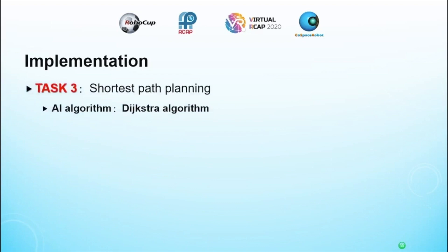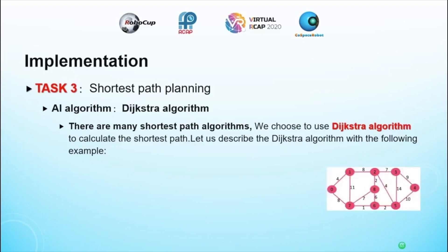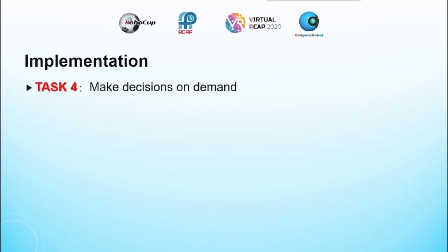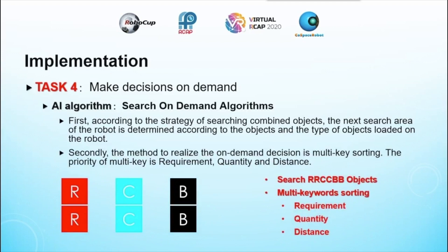Shortest path algorithm: the AI algorithm used is the D-star algorithm. There are many shortest path algorithms, and we chose D-star to calculate the shortest path. For the on-demand search algorithm, according to the technology of computing objects, the next target area of the robot is determined based on the object and the type of object loaded on the robot. The method releases the on-demand distance using a multi-key sorting approach based on priority and distance.